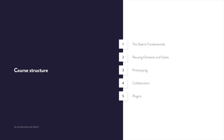Sketch has some great prototyping features, and we'll cover those in Chapter 3. In Chapter 4, we'll talk about how you can collaborate with other people using features like Sketch Cloud and Sketch for Teams, and we'll also learn about the exporting capabilities in Sketch. Finally, in the last chapter, we'll cover the plugin system for Sketch. We have a lot to cover, so let's begin with the basics.